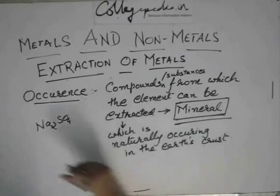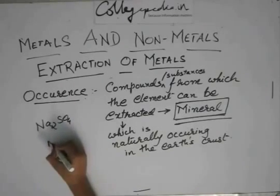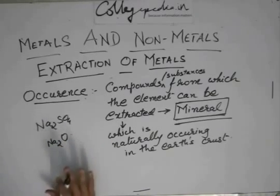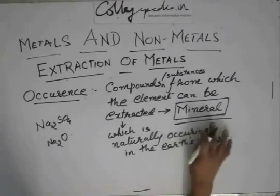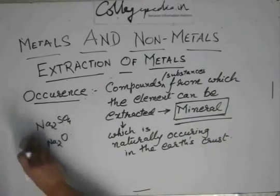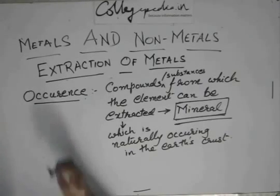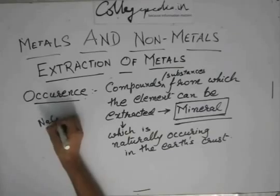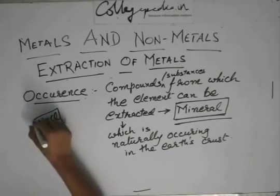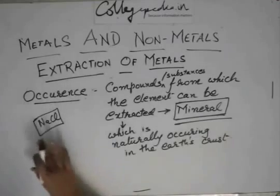For example, Na2O has sodium in it, but you will not find it occurring naturally in the earth's crust, so it is not called a mineral. But NaCl is always found in seawater, so NaCl is a mineral of sodium.